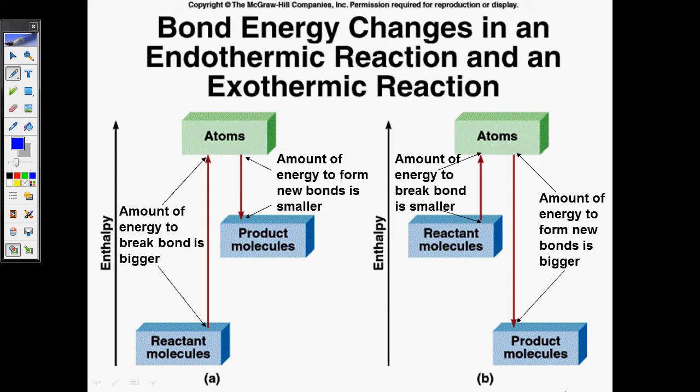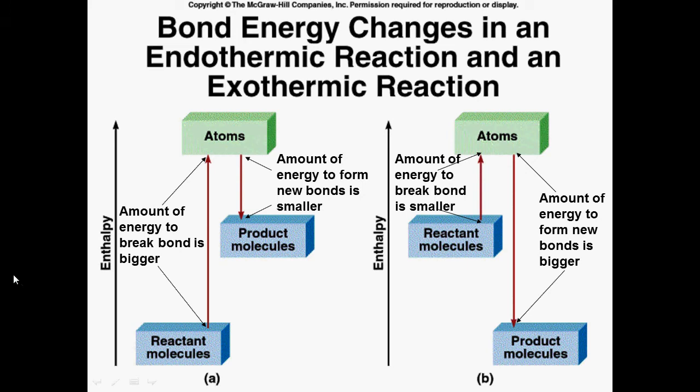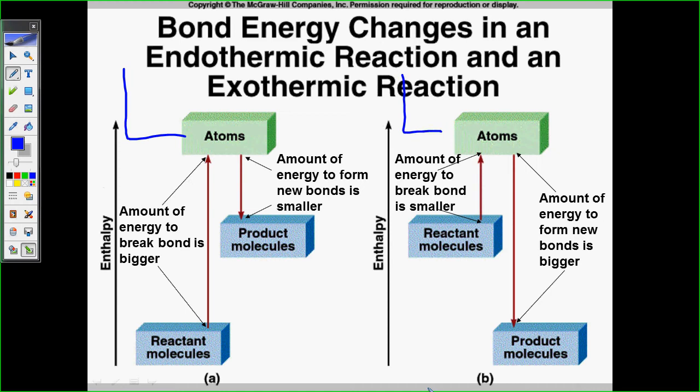Bond energy changes in an endothermic and exothermic reactions. So we need to draw this, we need to make a graph. So if I was to draw a graph on each of these, first of all, which one do you think is endothermic and which one do you think is exothermic?